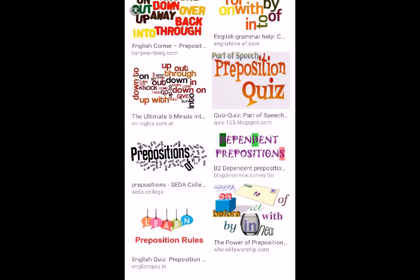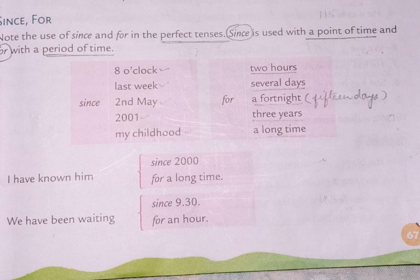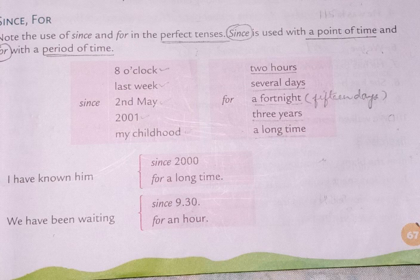Now, dear students, we have to see the use of 'since' and 'for'. Since and for are used in the perfect tenses. Since is used with a point of time in the past, and for is used with a period of time.